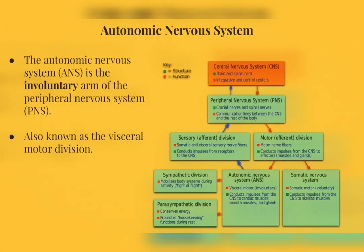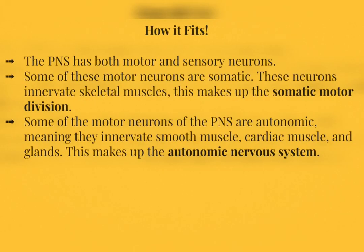The autonomic nervous system is also referred to as the visceral motor division of the PNS. This is because it controls homeostasis of visceral organs, such as the lungs, the heart, and the stomach, just to name a few.